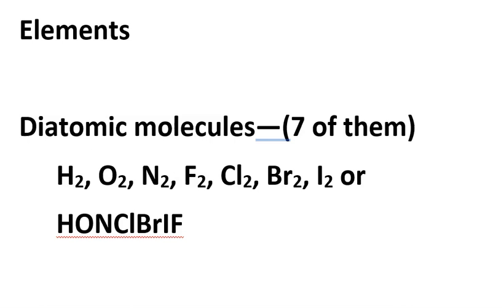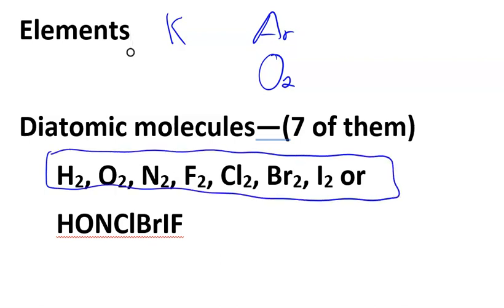So typically, if we're talking about potassium, we would just be talking about a K. Or argon, we'd be talking about Ar for argon. But if we say oxygen, we would automatically assume it's going to be O2. Why is that? Because it's one of the seven diatomic molecules. They just come this way.